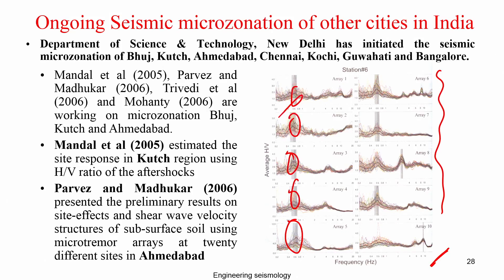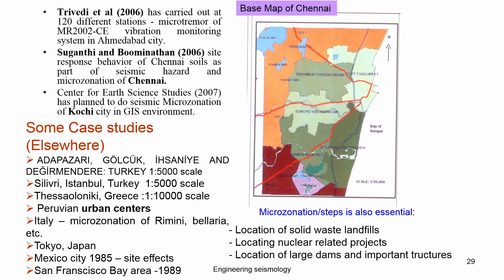Mapping of predominant frequency helps understand how geological formation and soil thickness varies across a study region. Similarly, microzonation work was carried out for Chennai city by IIT Madras — Boominathan and his group. Some other people also carried out microzonation of Kochi, where SES and Trivedi carried out microtremor studies. These people independently produced reports as well as publications.